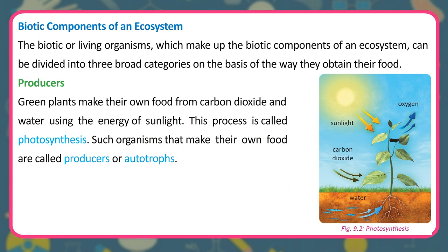The biotic, or living, organisms that make up the biotic components of an ecosystem can be divided into three broad categories based on how they obtain food. Producers: green plants make their own food from carbon dioxide and water using the energy of sunlight, through a process called photosynthesis. Such organisms that make their own food are called producers or autotrophs.